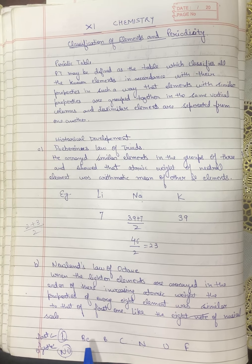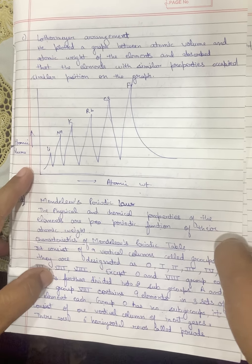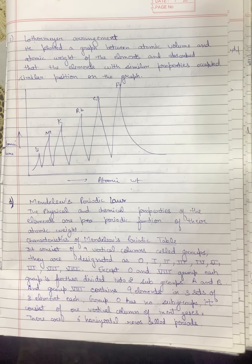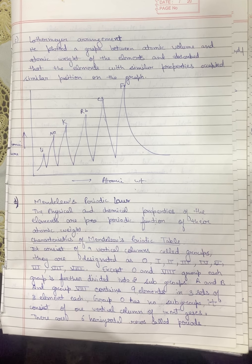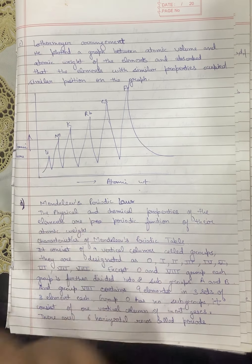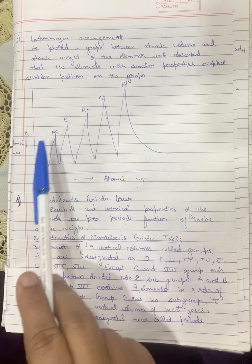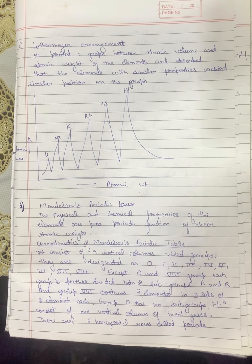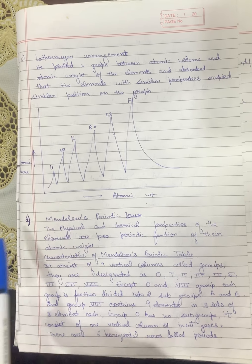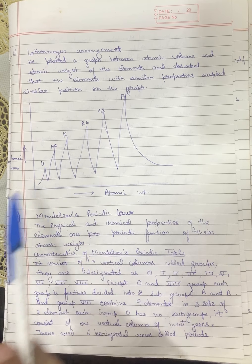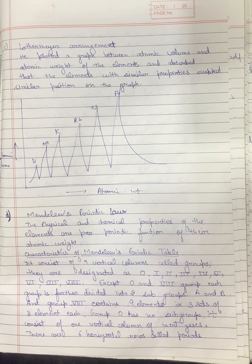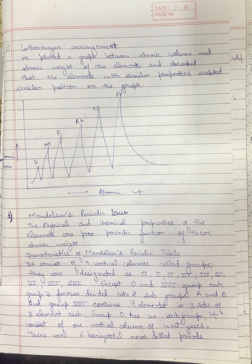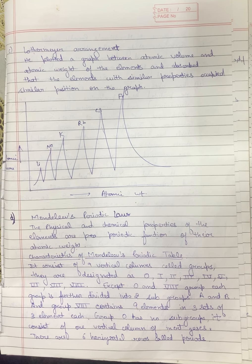Next is Lothar Meyer's arrangement. In this arrangement, he plotted atomic volume against atomic weight. When the graph was plotted, he observed that elements with similar properties appeared at the same positions — for example, all alkali metals like lithium, sodium, potassium, rubidium, cesium, and francium appeared at the peaks. Similarly, halogens appeared at the same positions.